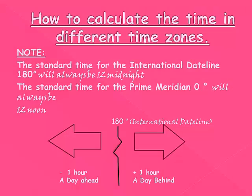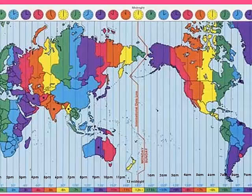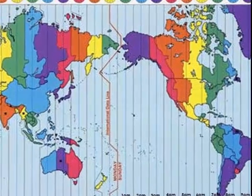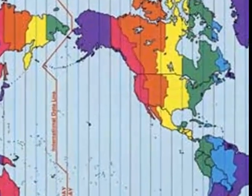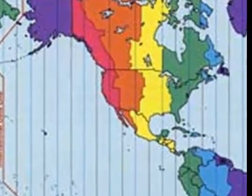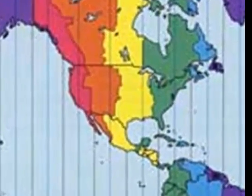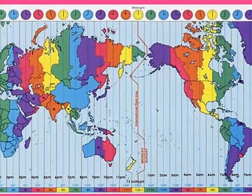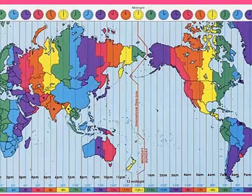For an example, if Sydney is 10pm on Monday, what time would it be in Los Angeles, United States? If Sydney is 10pm Monday evening, Los Angeles would be experiencing 4am on Sunday.